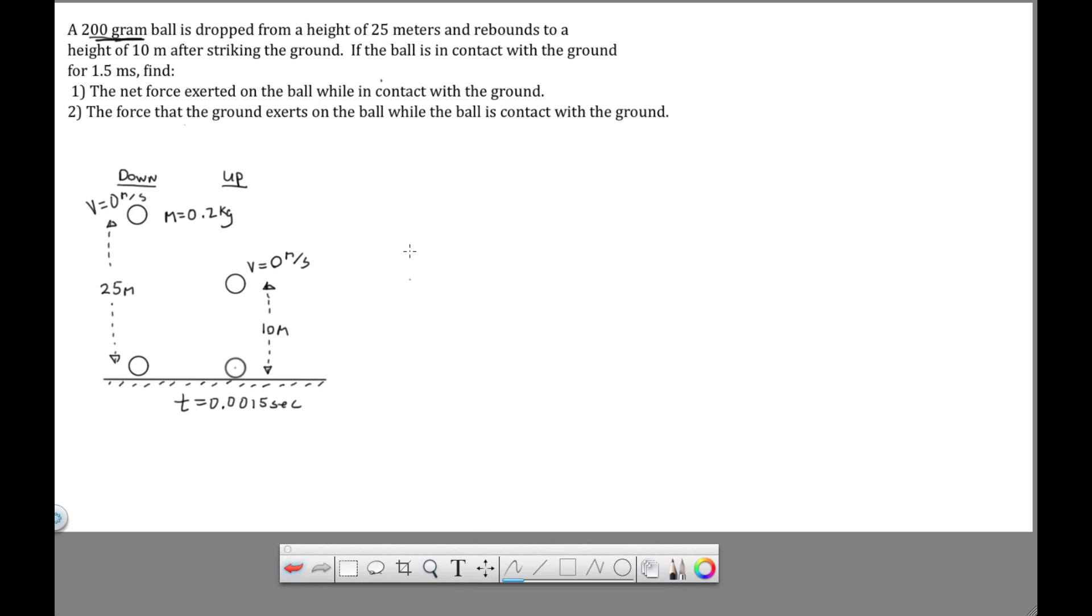So if we look at the ball when it's touching the ground, so here's the ground, there are two forces acting on the ball. Gravity, the force of gravity is down and normal force is up. So we sum the forces and we get normal force minus mg equal to ma.